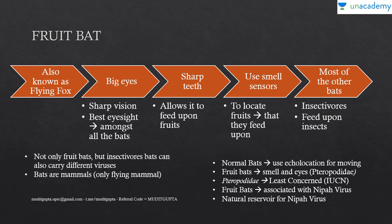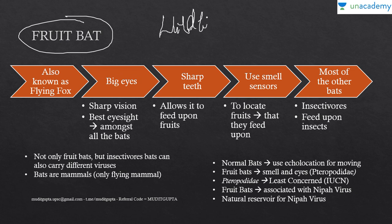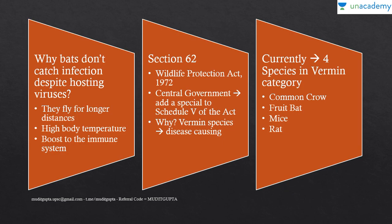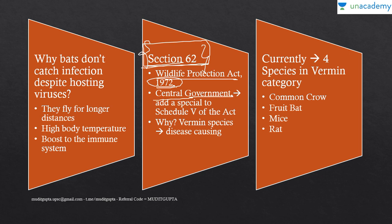Now a very important question: what is the status of bat and fruit bat under the Wildlife Protection Act? Under the Wildlife Protection Act 1972, there is a section — Section 62 — which says that the central government is the nodal authority to add a species to Schedule 5 of the act. Schedule 5 is related to vermin species.